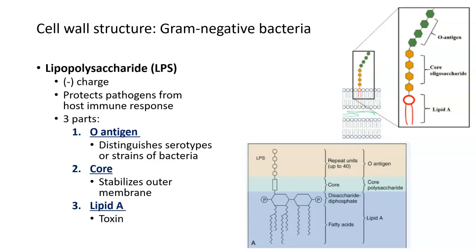Some other things that lipopolysaccharides can do: they can help us distinguish between different types or strains of bacteria. Each bacteria will have a different group of sugars, particularly at the very end portion of the lipopolysaccharide called the O antigen — the very external part. Those different sugars serve almost like a barcode to identify different types of bacteria.